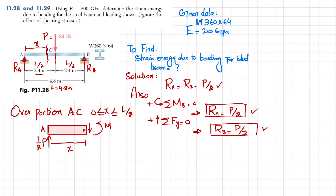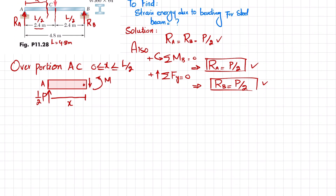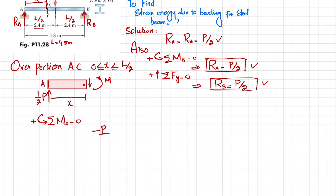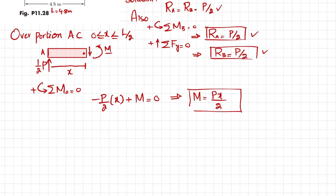When we cut the beam over this section, there will be a shear force and an external moment. Taking point O at the cut, sum of all moments about O equal to zero with counterclockwise positive: the moment due to R_A is (P/2) times x, acting clockwise, so it is negative. Setting the sum to zero gives M equal to Px/2. This is the moment equation for portion AC.